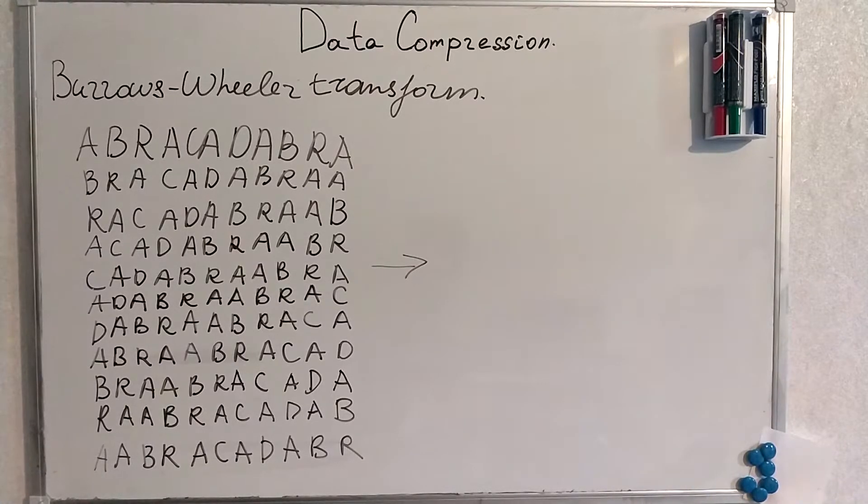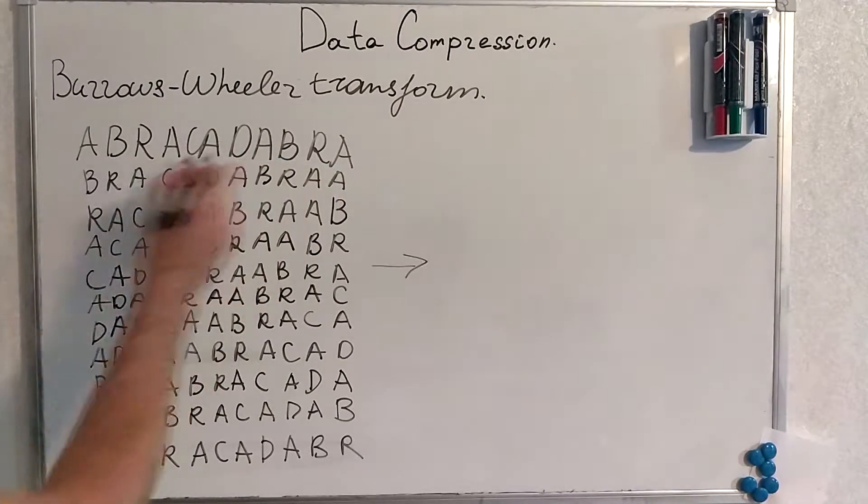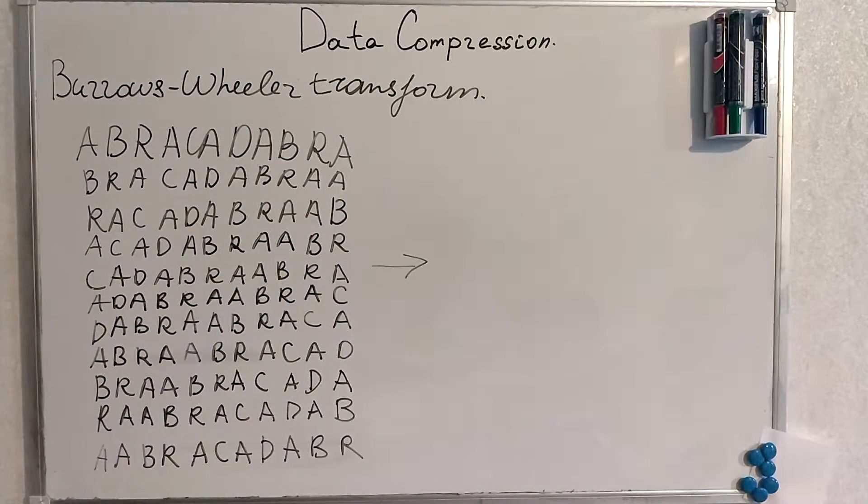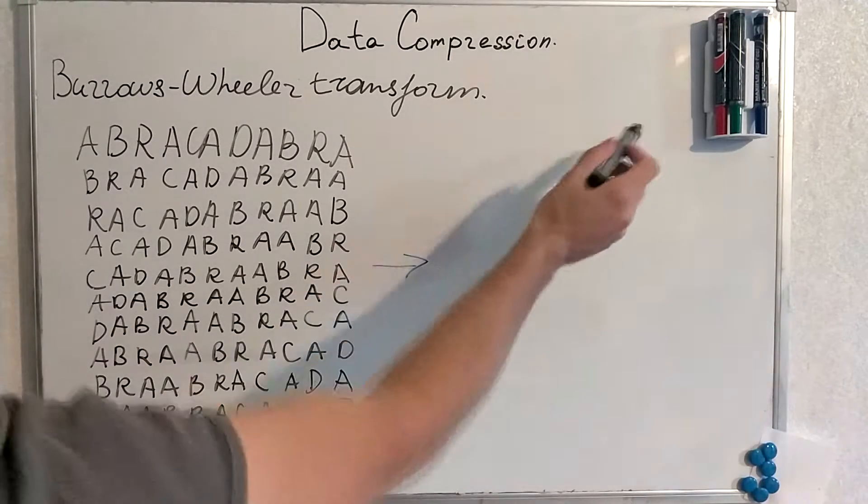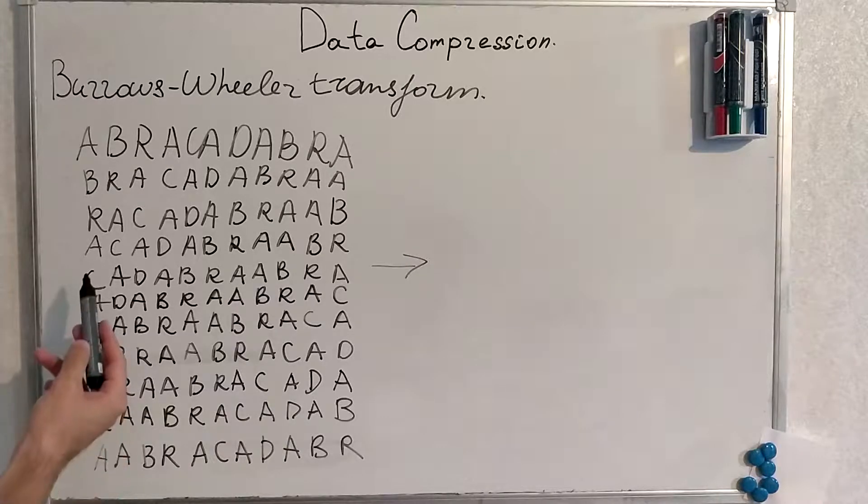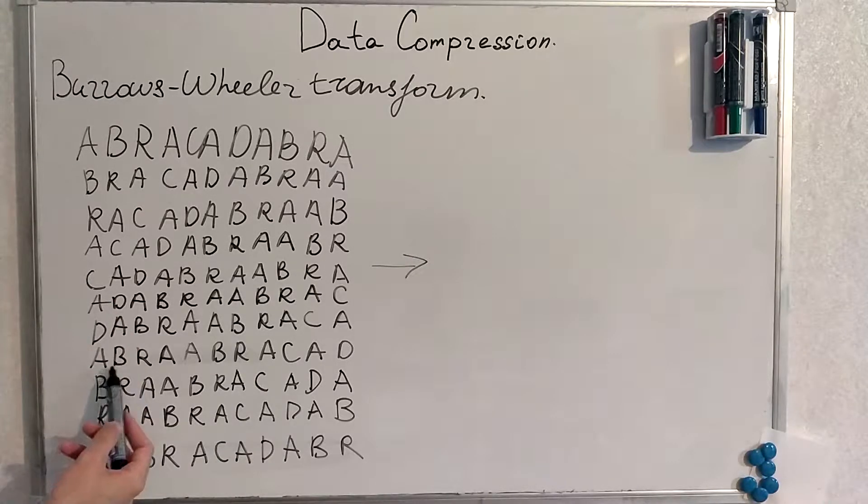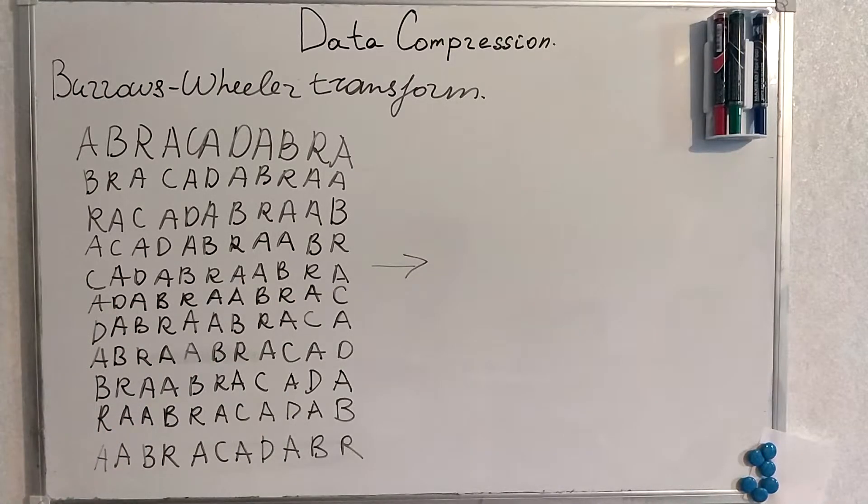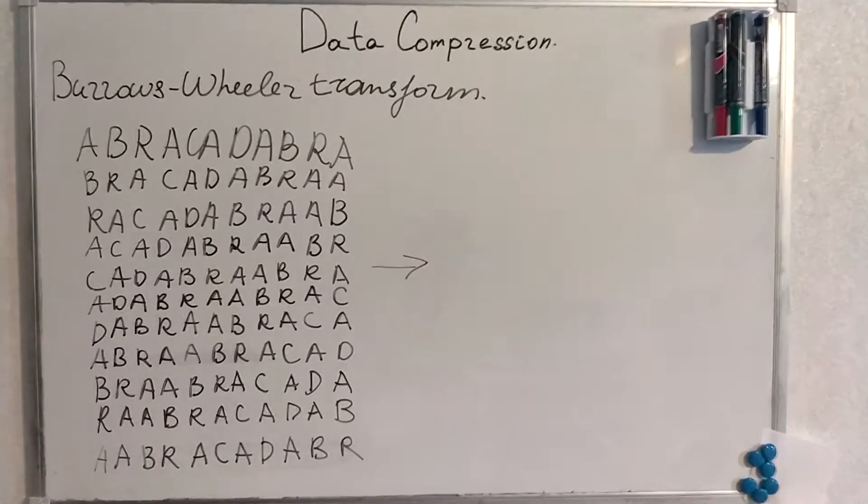Now we will sort these small sequences as rows in lexicographical order such that, for example, this A-A-B-R-A will become the first row. The second one will be, I think, this one. I will show it in any case.